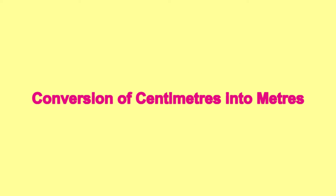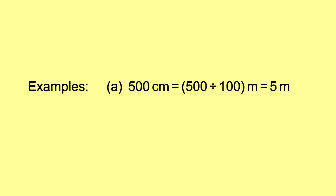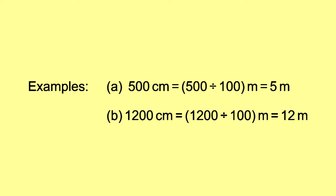Conversion of centimeters into meters: we divide the centimeters by 100. Example: 500 centimeters is equal to 500 ÷ 100 meters, which is equal to 5 meters. 1,200 centimeters is equal to 1,200 ÷ 100 meters, which is equal to 12 meters.